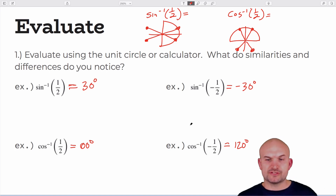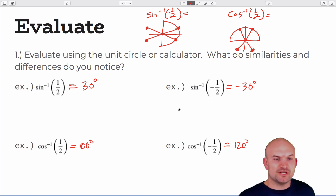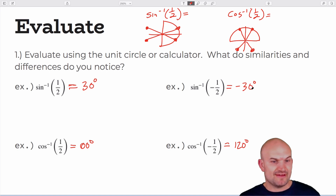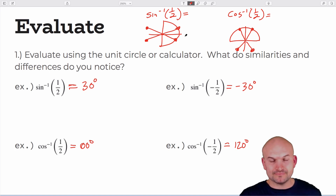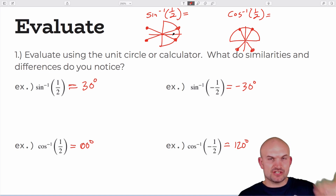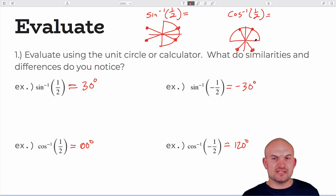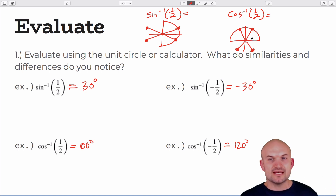The key point is that for sine inverse, you're only going to get an acute angle because the restriction is between negative 90 and positive 90 — you'll never get an obtuse angle. For cosine inverse, the restriction is between 0 and 180, so it will give you either the acute or obtuse angle. Students notice that for sine, the negative value gives the negative angle; for cosine, you just double those angles in the first and second quadrant.